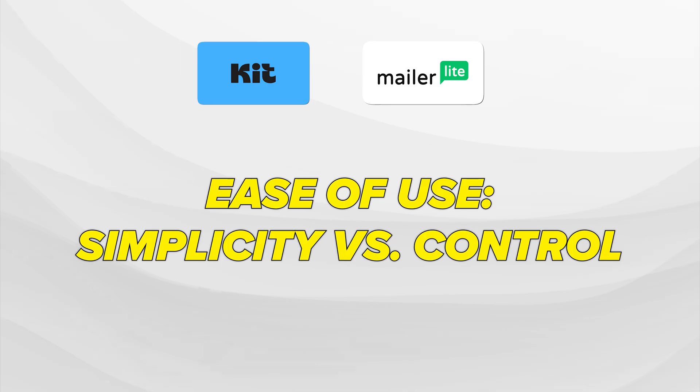Ease of use — simplicity versus control. This is one of the most noticeable differences between these two tools. MailerLite is super simple: you can log in, click create campaign, and be sending out an email in minutes, with very little setup fatigue. Kit isn't hard once you get the hang of it, but it does take a little more upfront learning. Once you do learn it, Kit can be incredibly efficient, especially if you're managing multiple offers or complex subscriber journeys.